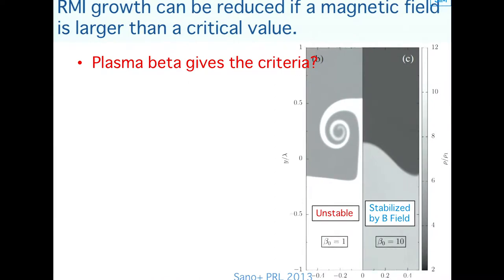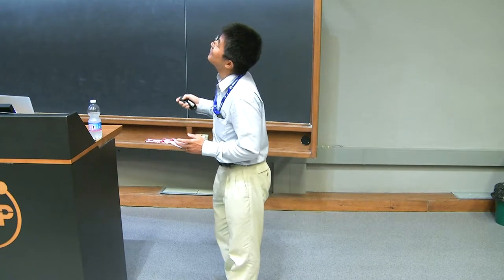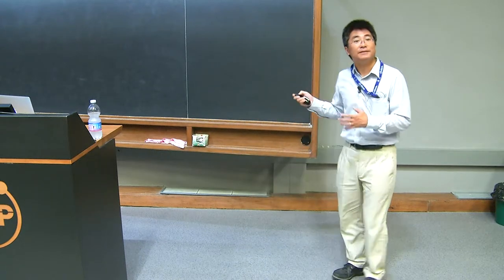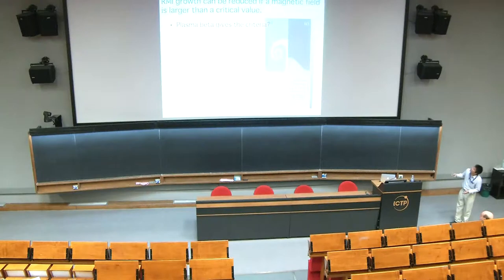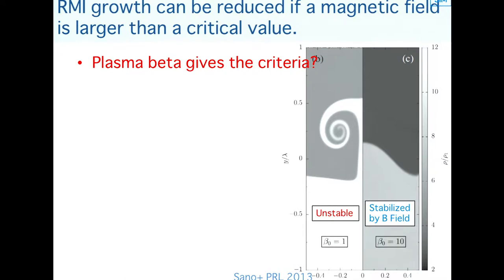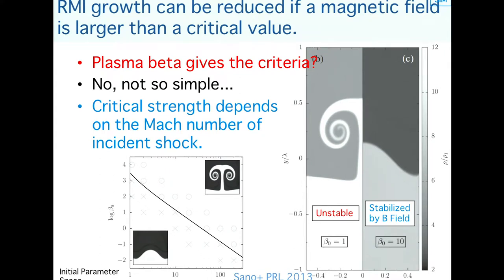Richtmyer-Meshkov growth can be reduced if the magnetic field is larger than a critical value. This figure shows the MHD simulation result — the left case is unstable, and the right case is stabilized by the magnetic field. In many MHD phenomena, plasma beta gives the criterion. However, the unstable case has an initial beta of unity and the stable case has beta of 10, meaning a relatively stronger field is unstable for this specific case. The critical strength depends on the Mach number of the incident shock.